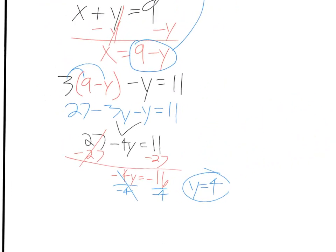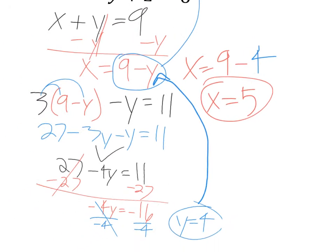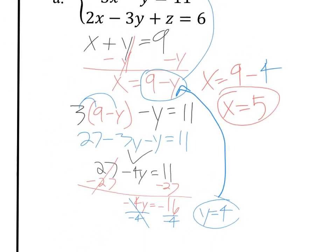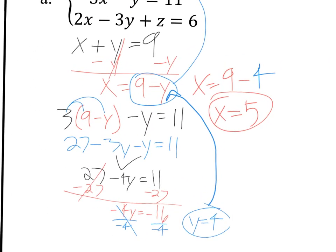So you can take this and then you can plug it in right there and you'll find your x answer. So if x equals nine minus y, then x equals nine minus four. So nine minus four is five. So now I have an x equals answer. So I can take these two numbers, x equals five, y equals four, and plug them into my third equation.